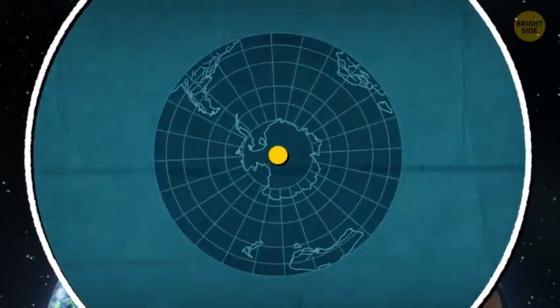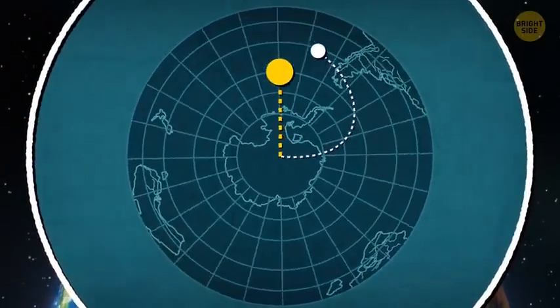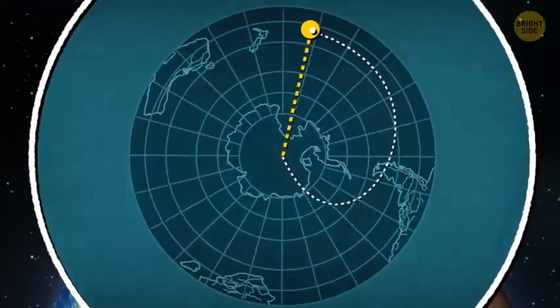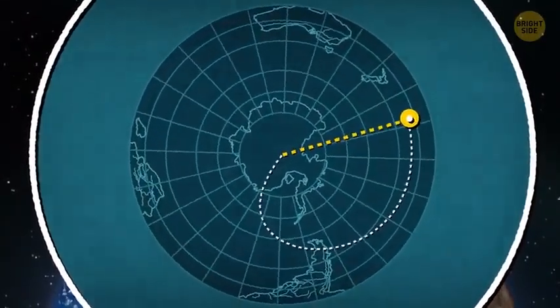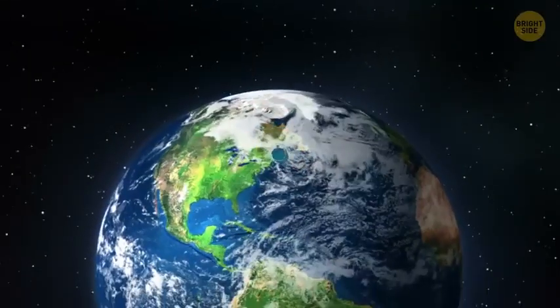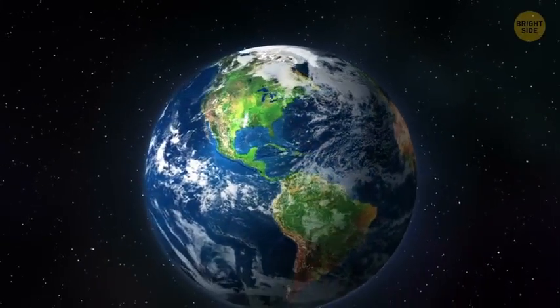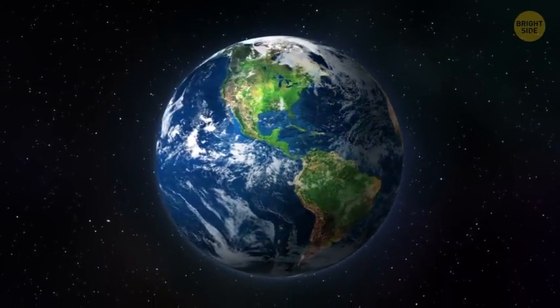As a result, the objects on the Earth's surface don't move straight on but deviate in clockwise order in the northern hemisphere and counterclockwise in the southern. But the Earth is moving slowly. It takes a planet a whole day to make a full circle around its axis.